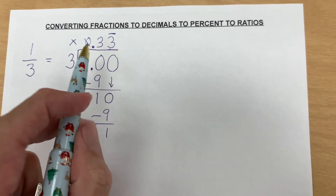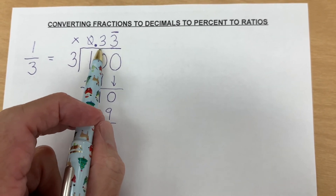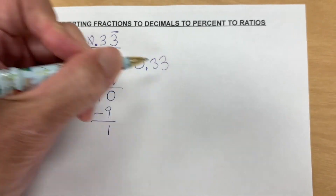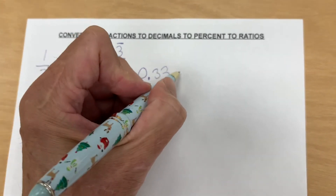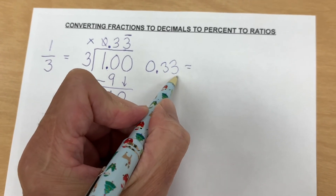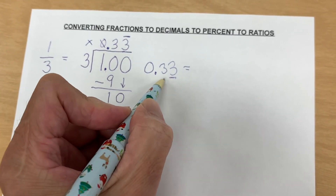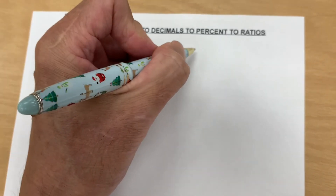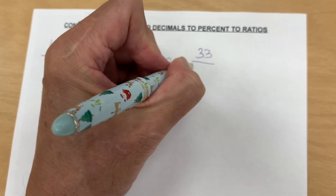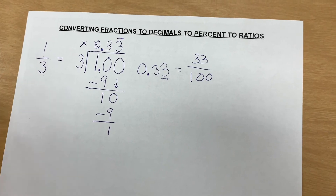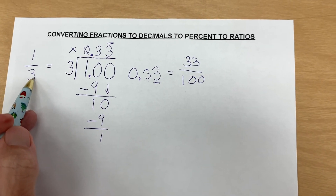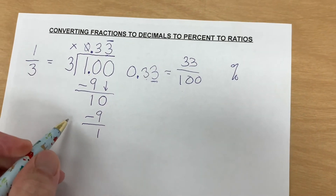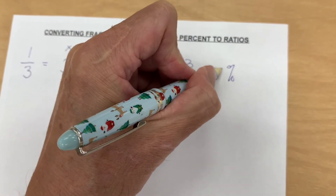So now, how can we change 0.33 — the decimal? This is the hundreds place, so that means we got 33 hundredths, which is also equal to one third. And the percent sign means hundredths, so we have 33 percent.